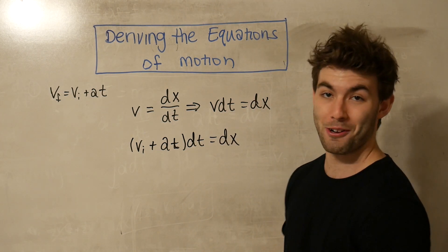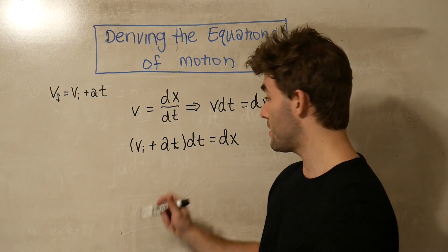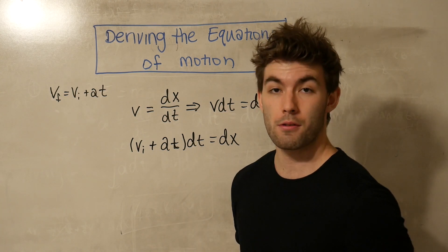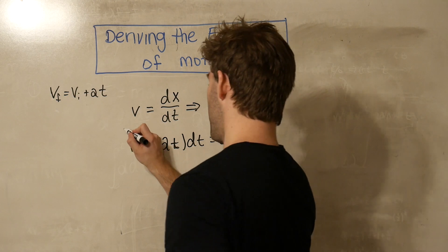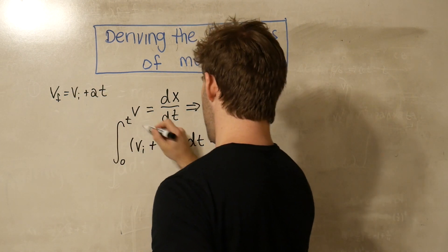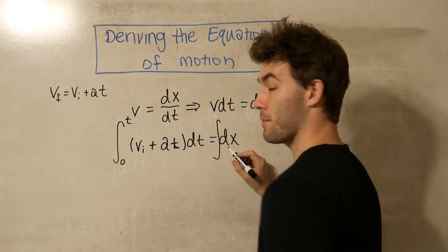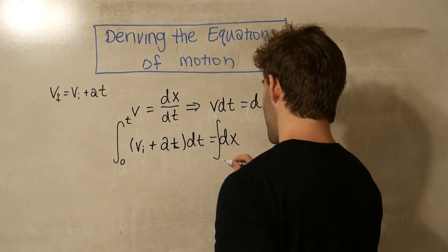And now we're going to integrate. So what we're going to do is we're going to integrate over t again, and it's just going to go from zero to t. So let's go ahead and just throw that in there. Position is going to go from some initial position to some final position.